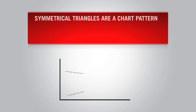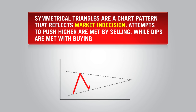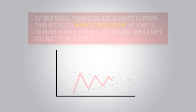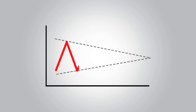Symmetrical triangles are a chart pattern that reflects market indecision. Attempts to push higher are met by selling, while dips are met with buying. Each new lower top and higher bottom becomes more shallow than the last, taking on the shape of a sideways triangle. Eventually this indecision is resolved, and the price usually explodes out of this formation.